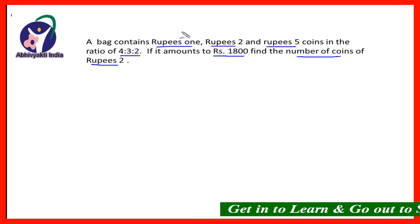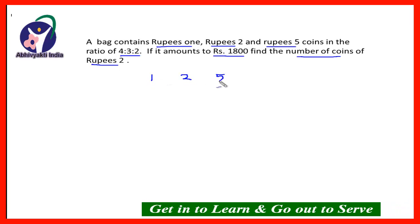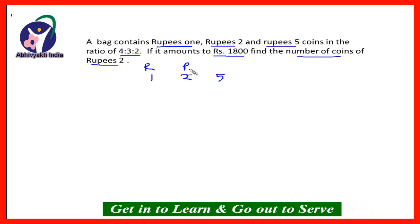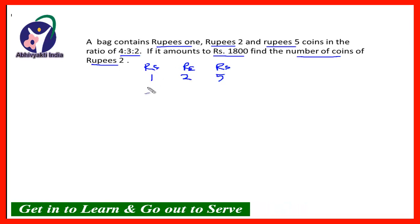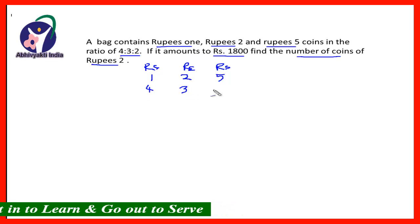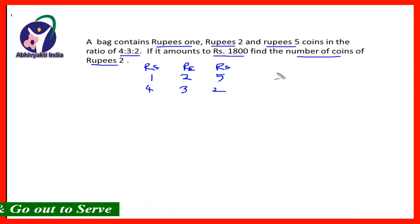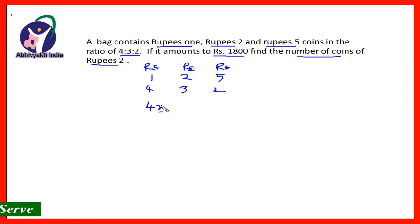Now, in a bag there are 1 rupee coins, 2 rupees coins and 5 rupees coins — all in rupees — and they are in the ratio 4:3:2. First, I'll solve it in the normal way: let us assume that the 1 rupee coins be 4x, 2 rupees coins be 3x, and 5 rupees coins be 2x. This all amounts to rupees 1800.